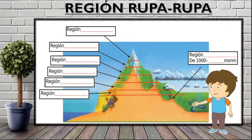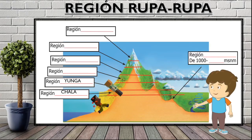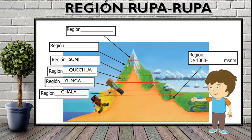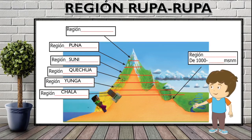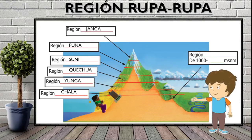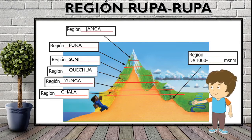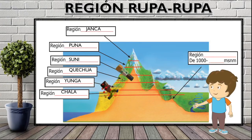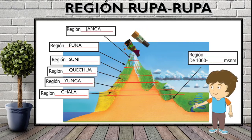For example, we have already passed through the region Chala, we have already passed by the region Yunga, we have gotten to the region Quechua, we have also gotten to the region Suni, we have seen the region Puna and we almost woke up in the region Janka — we have been up to the top of the Cordillera. And now we have to go to the other part of the Cordillera; we have been up, now we have to go down.